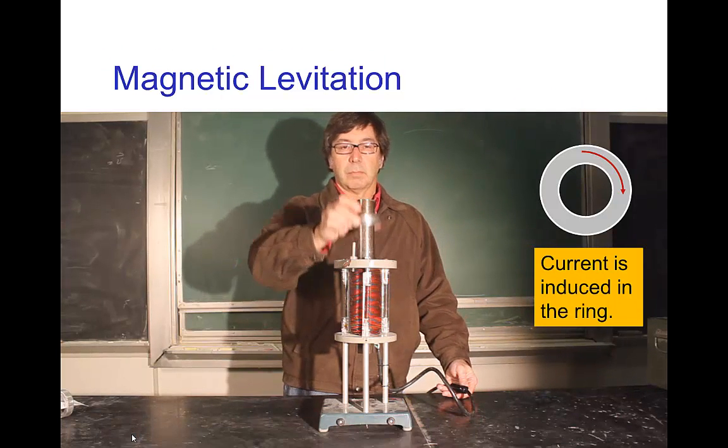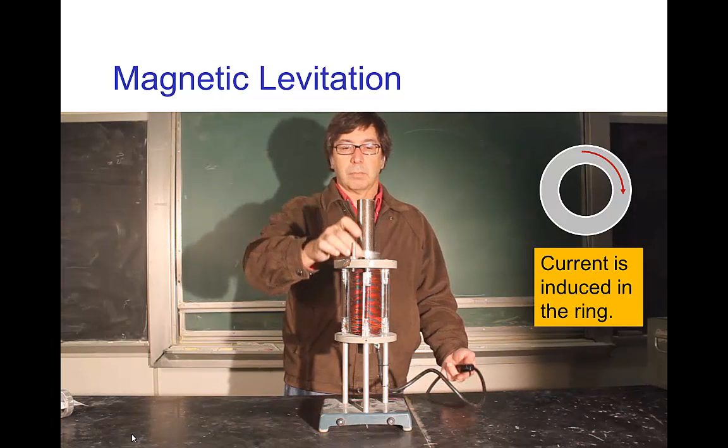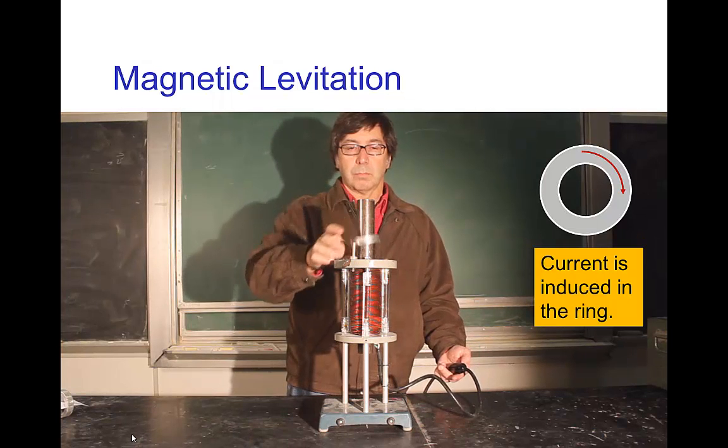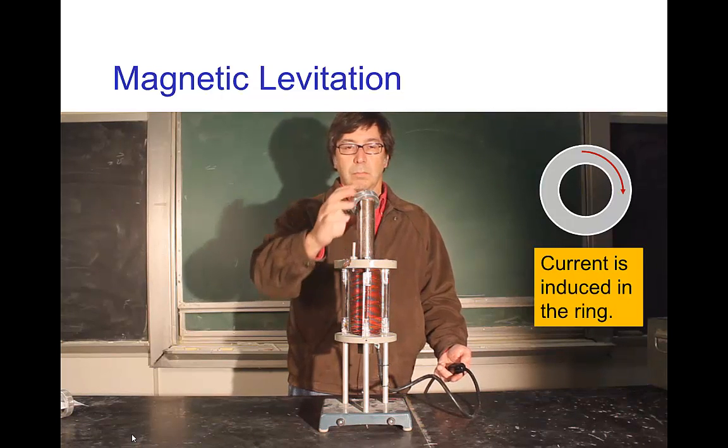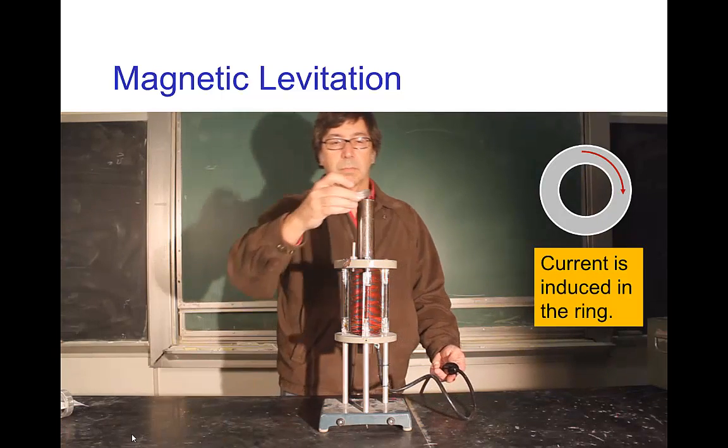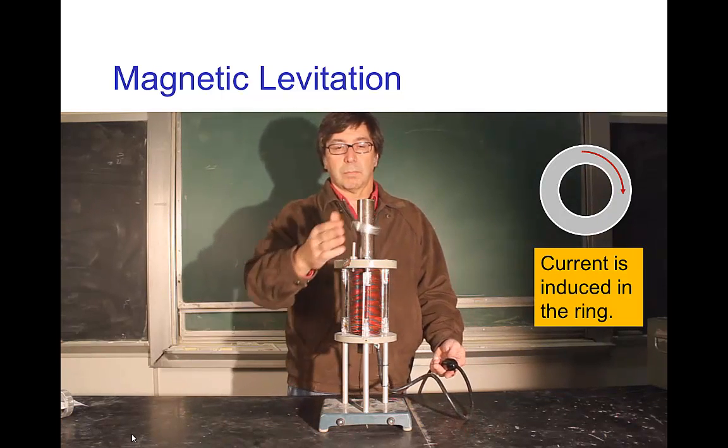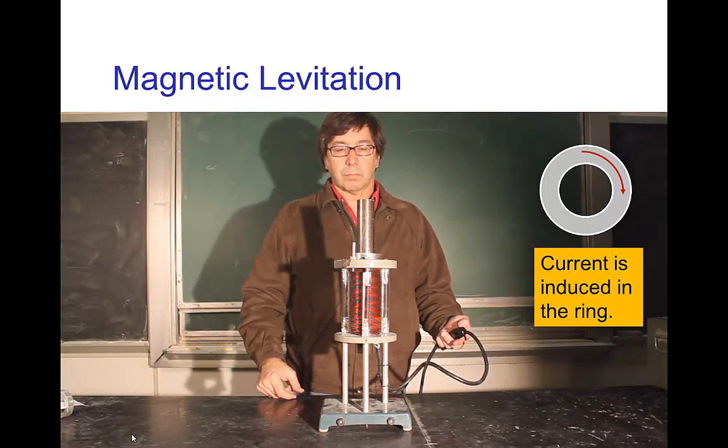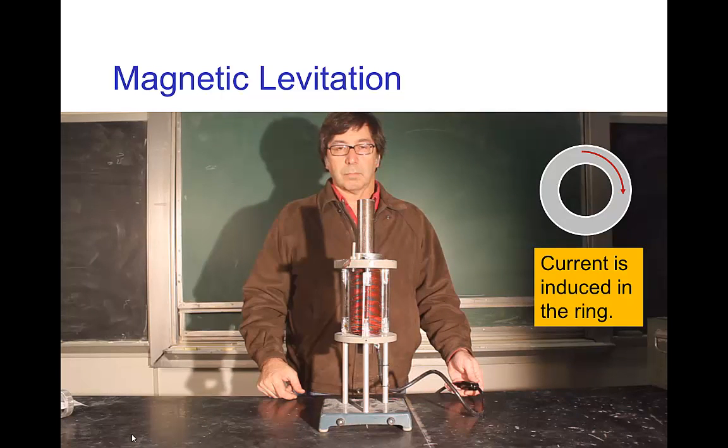I put that ring of metal, and now I turn on the magnet, and you see that there is now a repulsion between the AC electromagnet and this ordinary ring of metal. So as I said, the ring of metal, there's a current that goes through it. If you touch that ring, you'll see that it actually got hot, and that current produces the secondary magnetic field that causes the levitation.